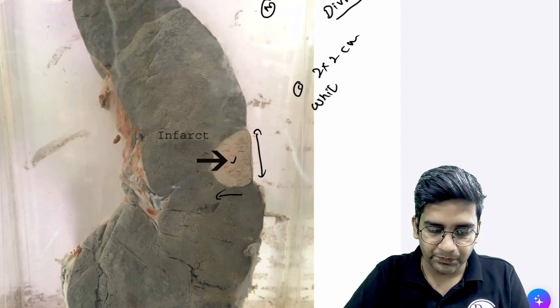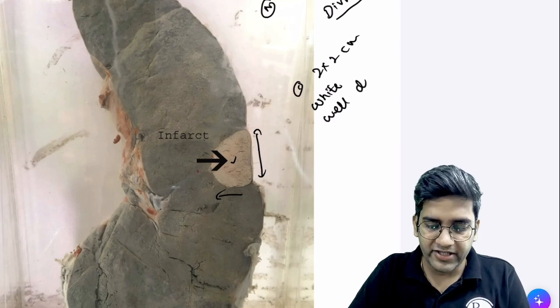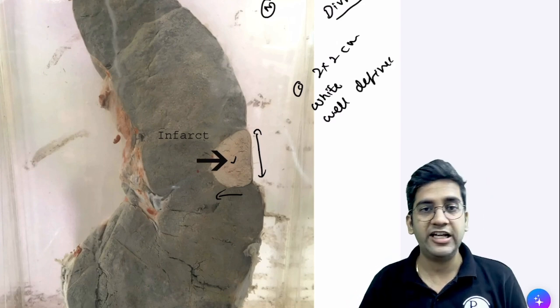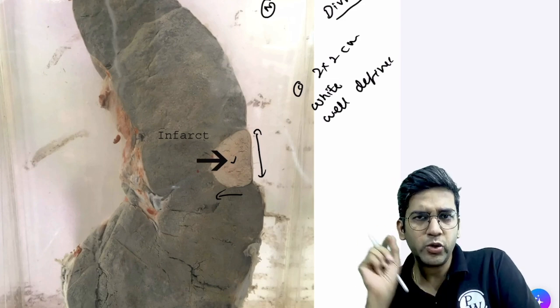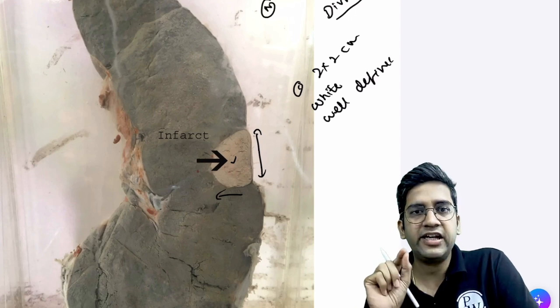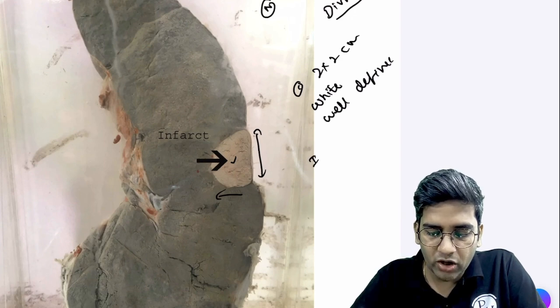Approximately 2 into 2 centimeter lesion which is a completely white in color and it's kind of well demarcated—a very well-defined lesion. It's definitely not an ill-defined lesion. To describe this lesion, I would say that looking at this well-delineated structure, looking completely white in color, looking like non-vascular tissue, I would think of an infarct of a spleen.